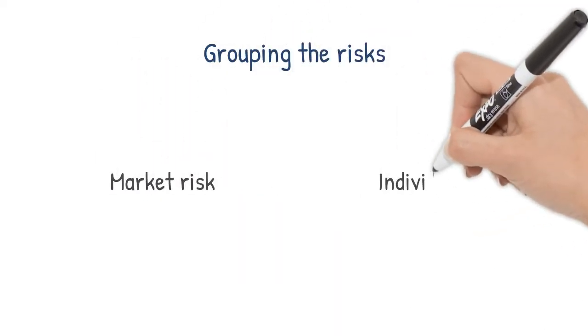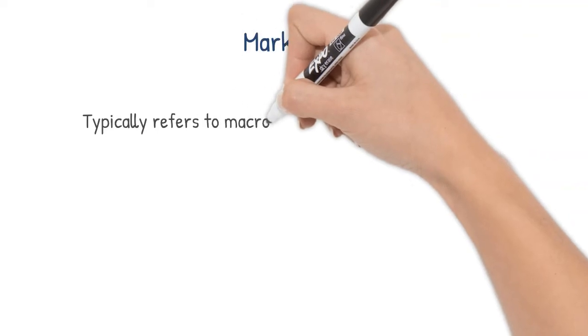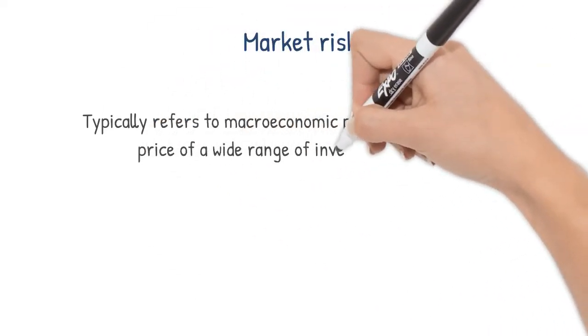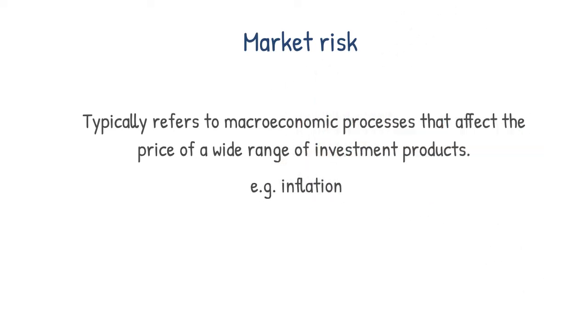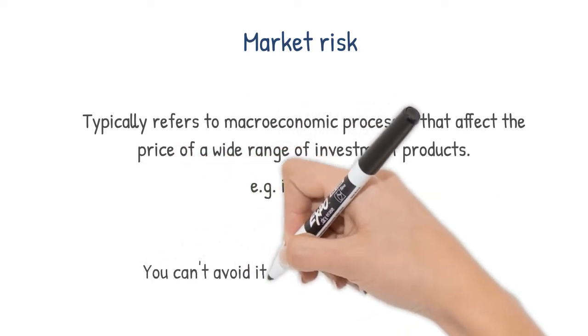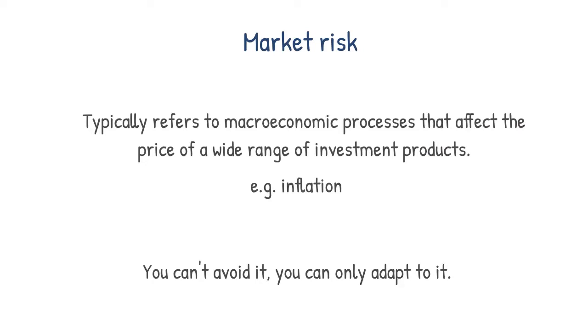One is market risk and the other is individual risk. Market risk typically refers to macroeconomic processes that affect the price of a wide range of investment products. Examples include inflation, changes in economic growth, or even changes in investor behavior. This type of risk cannot really be eliminated by diversification, as it affects almost the entire range.